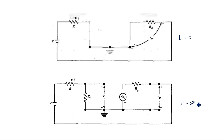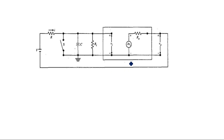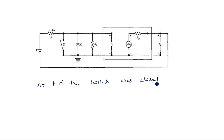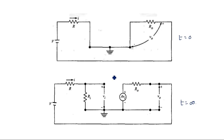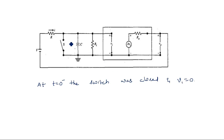At t equal to 0 minus, the switch was closed and vi is equal to 0, because before t equal to 0 minus we have not applied the input voltage. Since the voltage across the capacitor cannot change instantaneously, at t equal to 0 plus also vi is equal to 0.